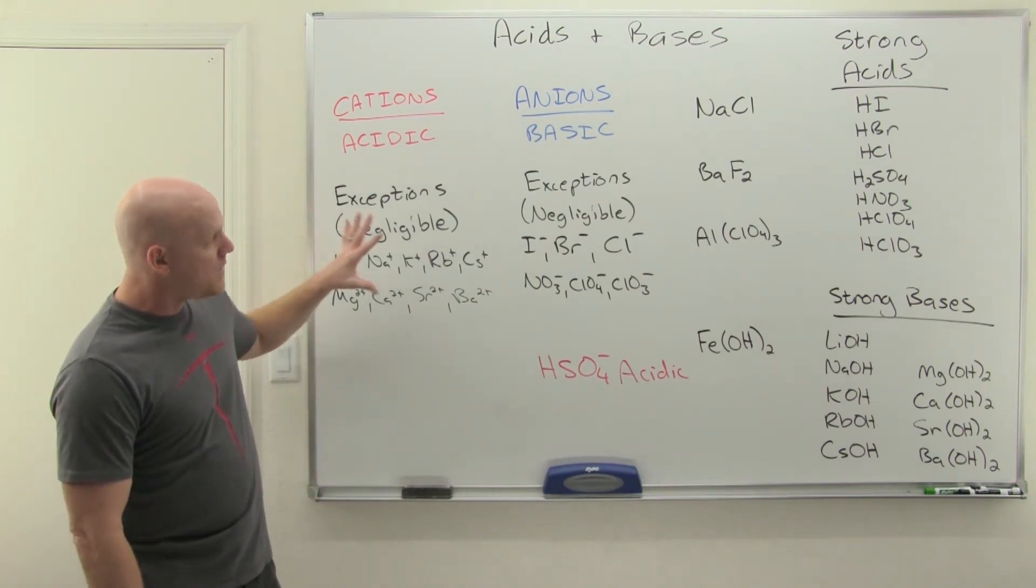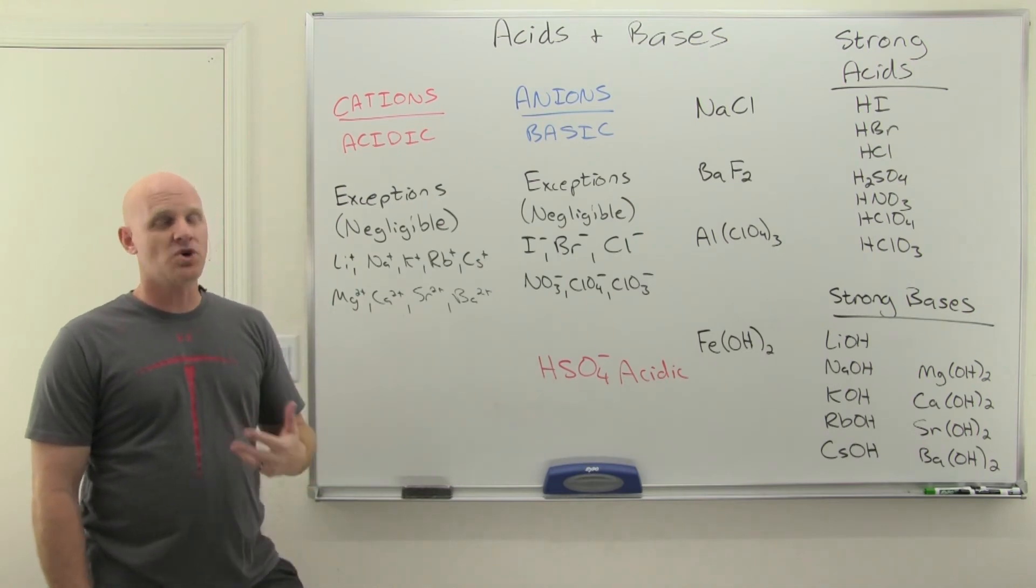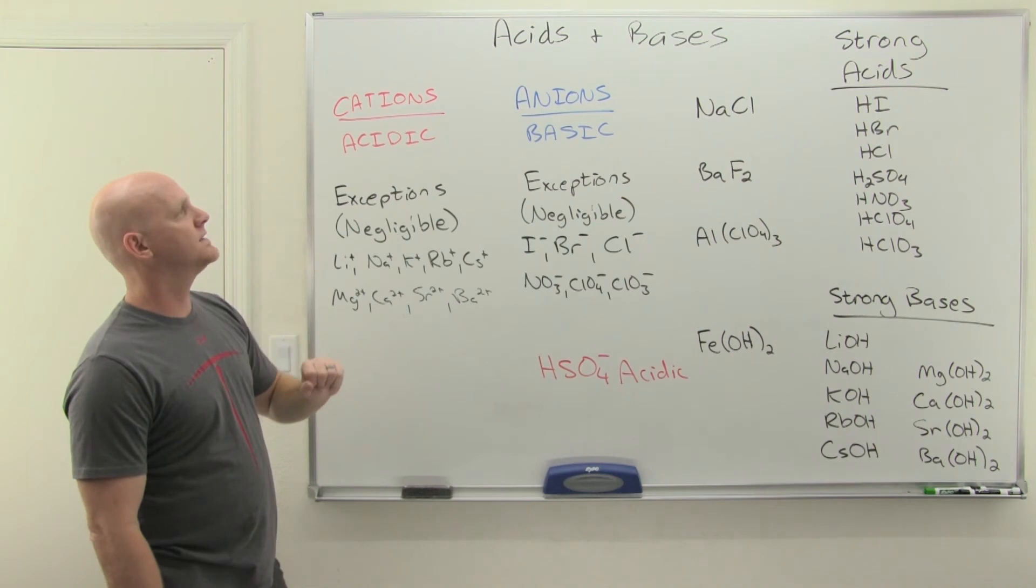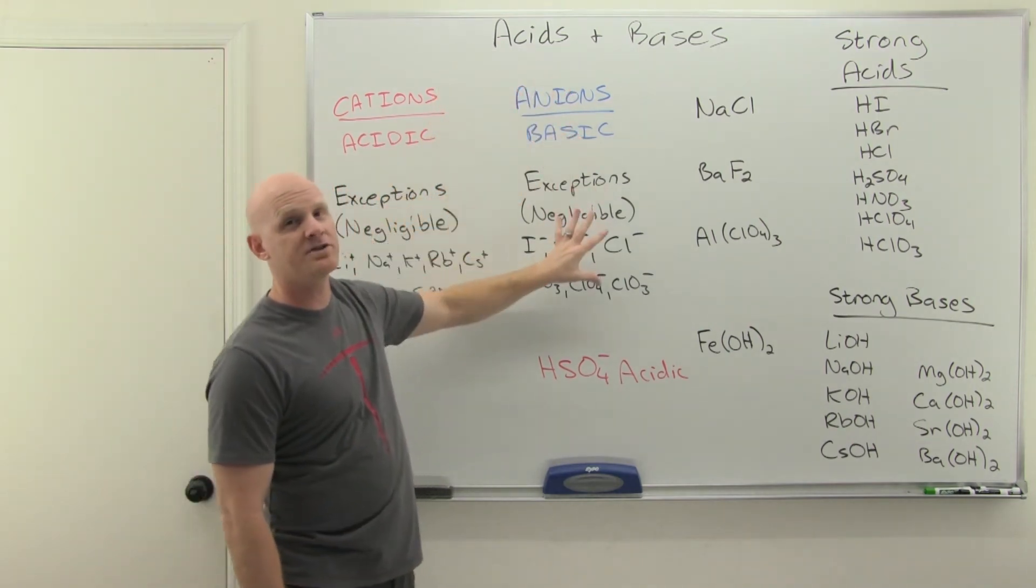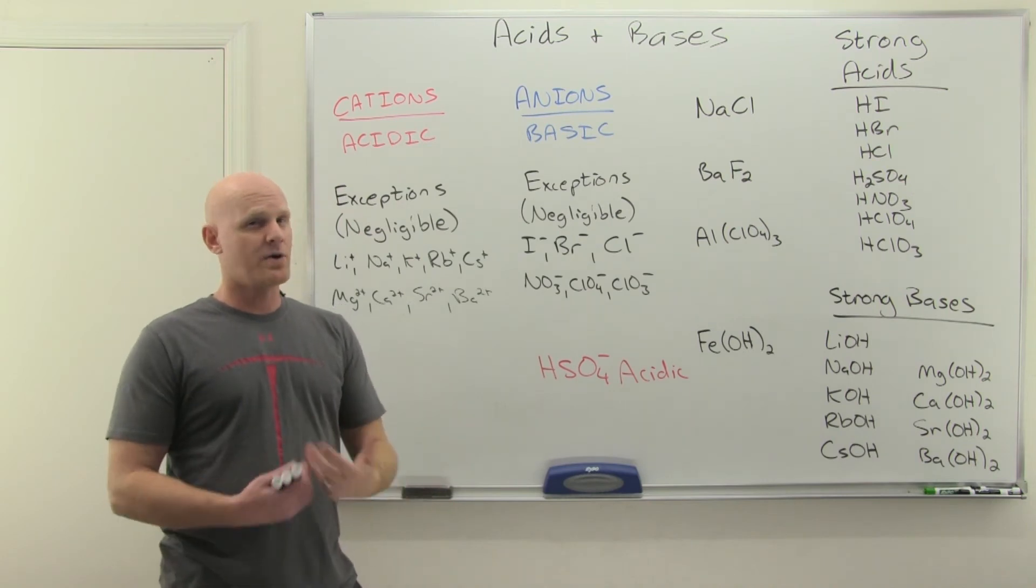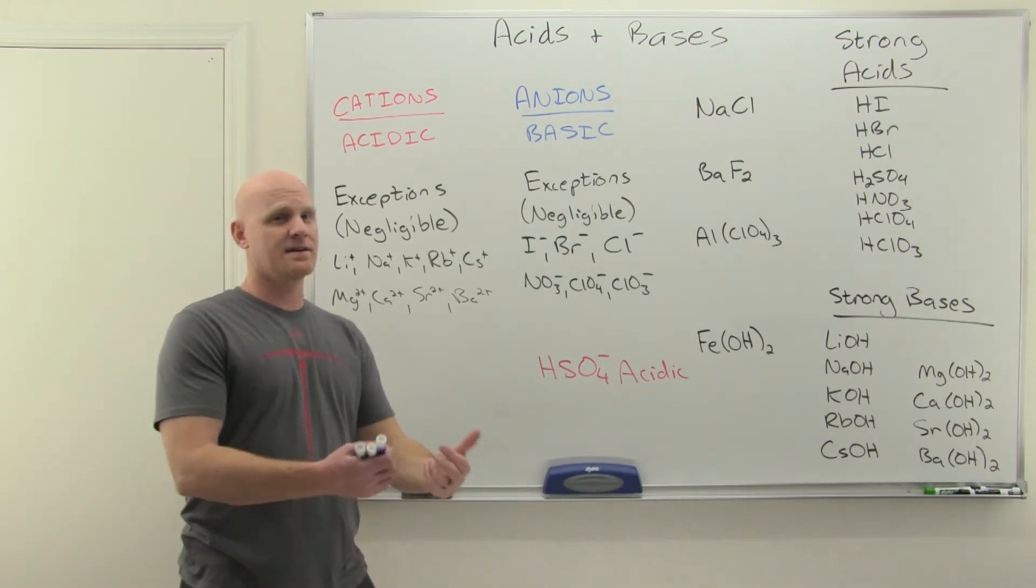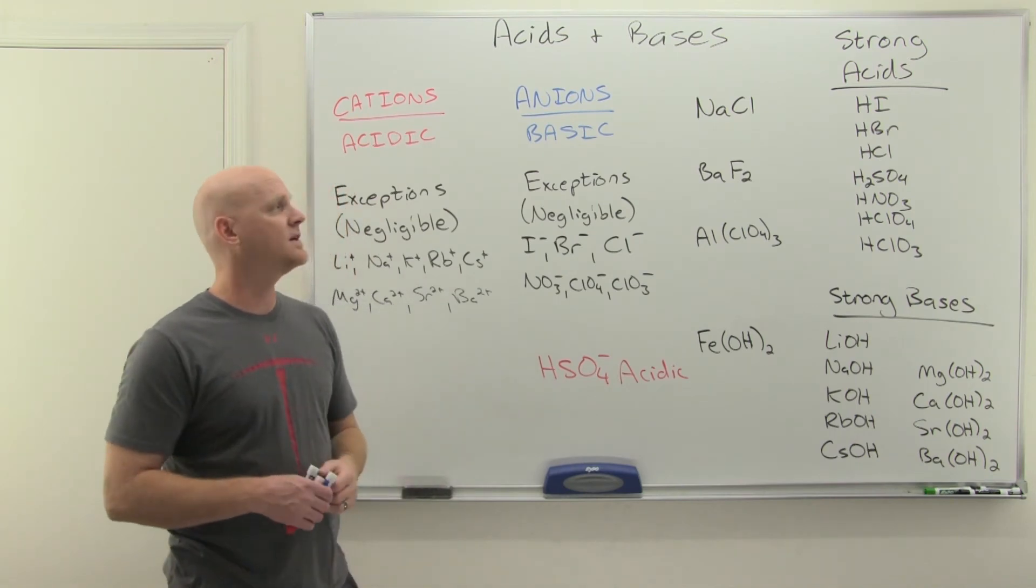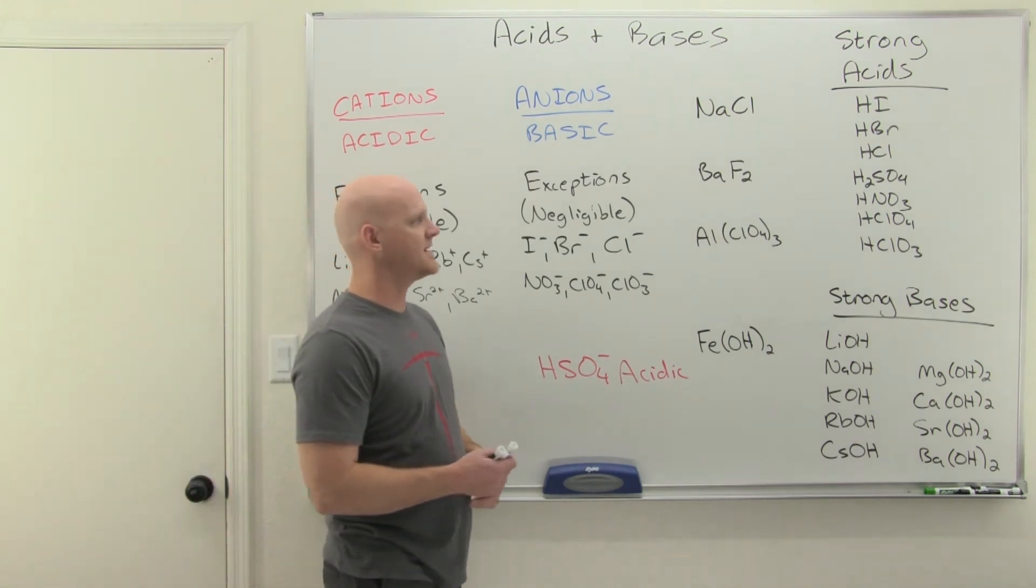Now we should be able to look at any salt. We can evaluate the cations: it's either an acid or it's negligible. We can evaluate the anions: it's either basic or it's negligible, or there's a very low chance it's an acid. Then we can figure out overall, is the salt acidic, basic, or neutral?